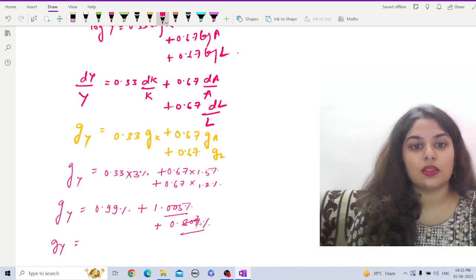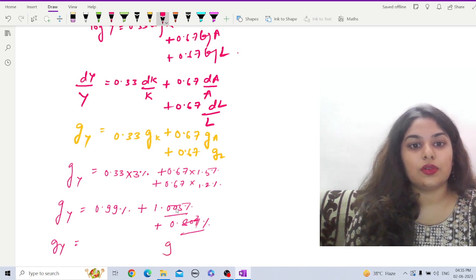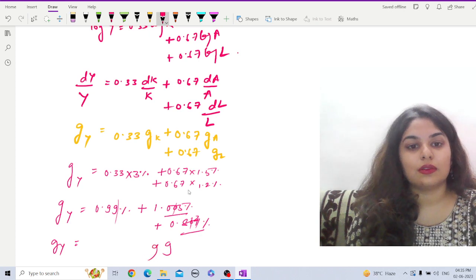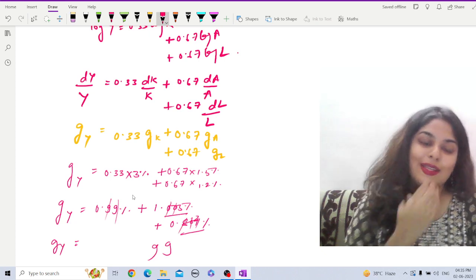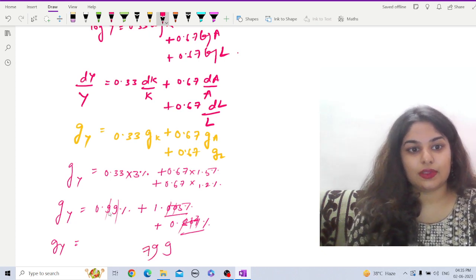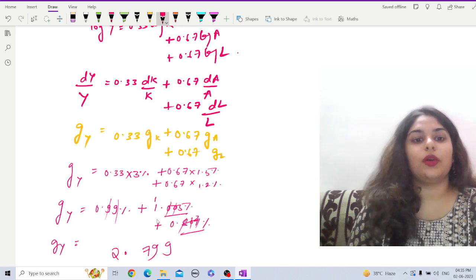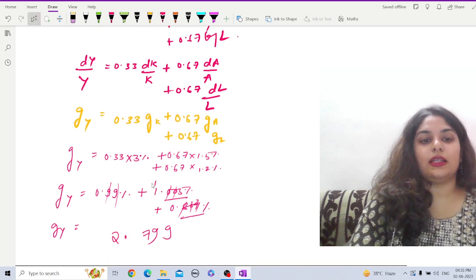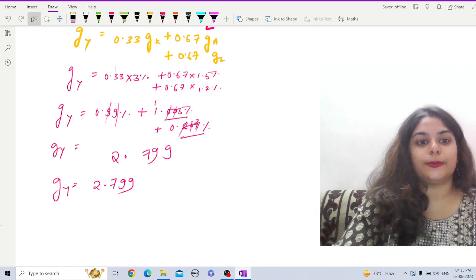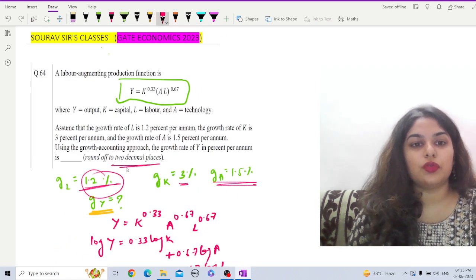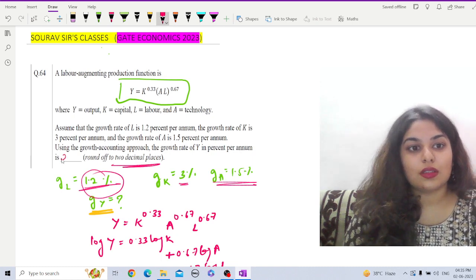So if we add we will get the answer. Let us add: 4 plus 5 is 9, 8 and 9 is 17, so this is 2.799. So gY = 2.799. Now here you have to round off to two decimal places, so it is 2.79. That is the correct answer.